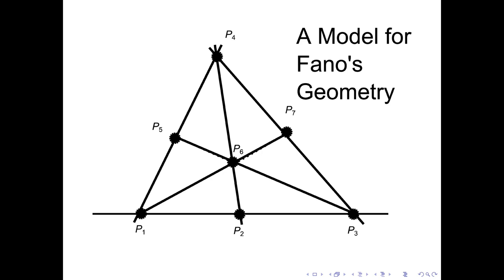We still have points without connecting lines: P5 and P2, P5 and P7, and P2 and P7. Those are the only three pairs left, and it just so happens we can put one line through all three of those points. Now all the axioms hold: there exists at least one line, every line has three points, not every point is on the same line, each pair of points has a unique connecting line, and each pair of lines meets in exactly one point — consistent with Theorem 1.7.